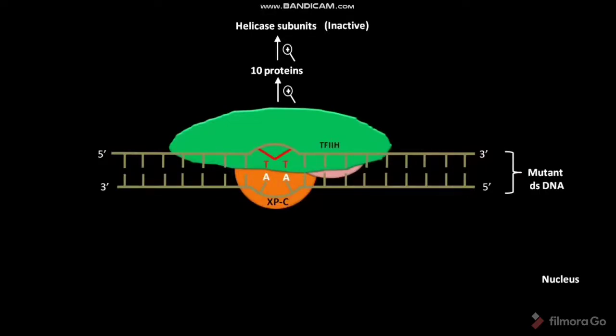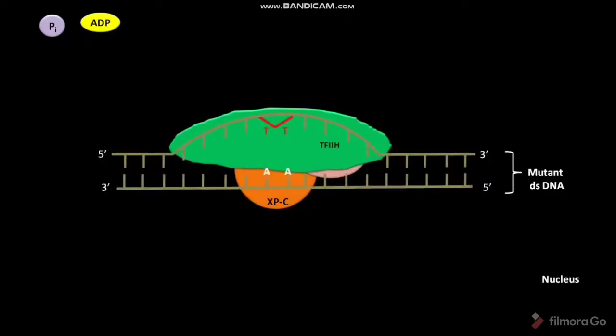The inactive helicase subunits bind to ATP. In a hydrolysis reaction, ATP forms ADP and Pi. Due to this ATP hydrolysis, the helicase subunits become active. ADP and Pi are then released to the nucleoplasm. The active helicase subunits of multiprotein complex TF2H then partially unwind the DNA double helix.